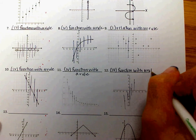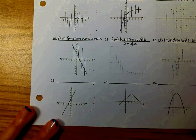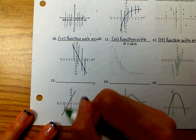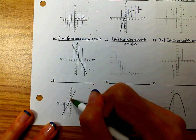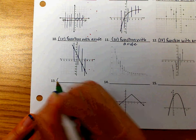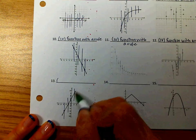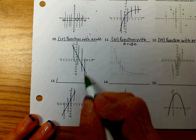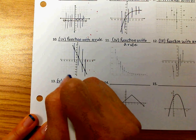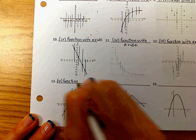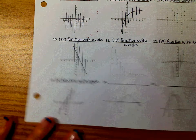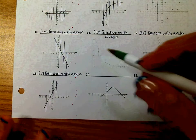Number thirteen — it's a function because it passes the vertical line test. I can predict it's going to keep going up in that direction and keep going down in the other direction. So it is a function with a rule.